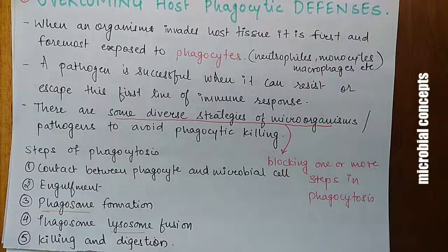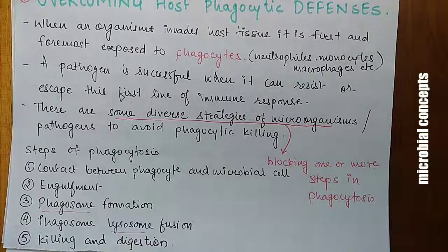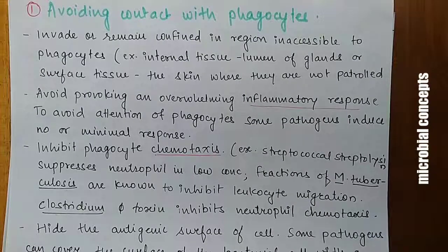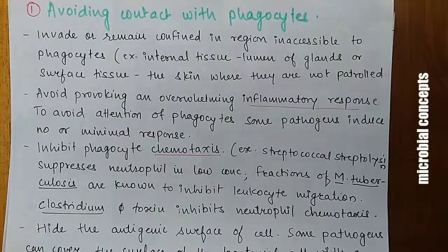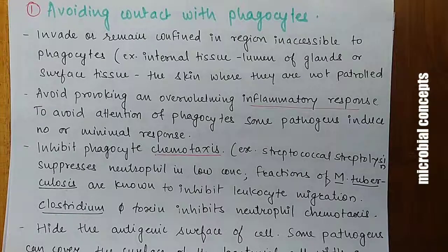Pathogens have developed strategies to block any one of these steps in phagocytosis. The first strategy is avoiding contact with phagocytes, which corresponds to blocking the very first step of phagocytosis.